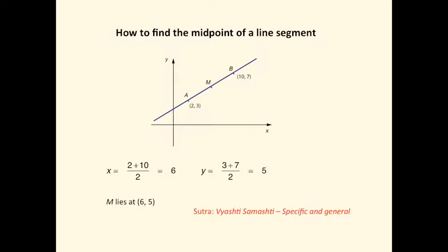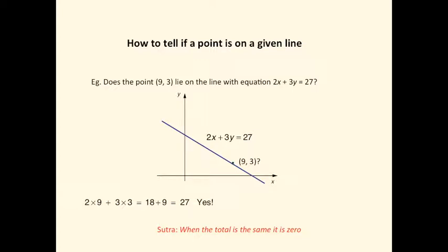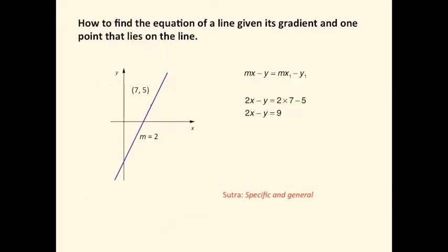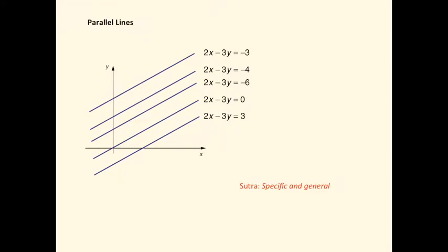Next we look at examples of parallel lines. Here we have examples of parallel lines, and the left-hand side in every case is exactly the same, so the gradient of parallel lines is the same. The coefficients of 2 and 3 have a relationship with the gradient, or the ratio of 2 and 3 has a relationship with the gradient. Again, the sutra involved here is specific and general, Vyashthi Samashthi.